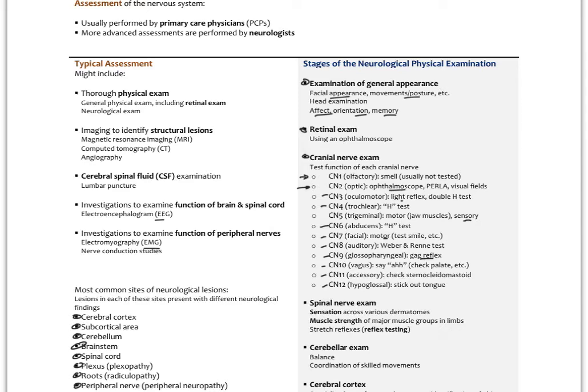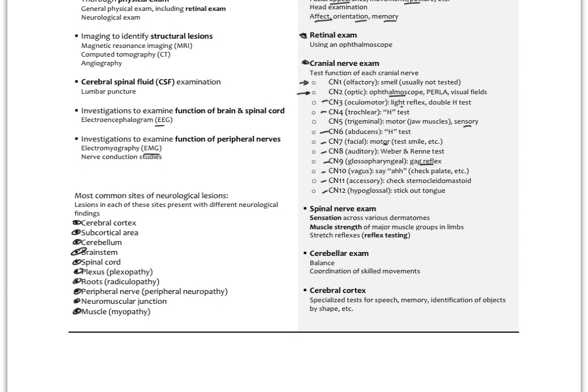That's a quick run-through of all 12 cranial nerves. It takes a couple of minutes if we suspect any problem with the cranial nerves — helpful for conditions like Bell's palsy or trigeminal neuralgia.